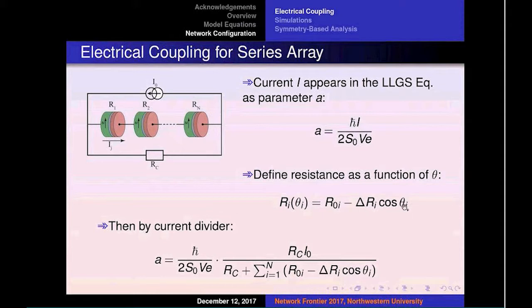When theta_i is equal to zero, the electrons are in parallel. When theta_i is equal to pi, they're anti-parallel. That produces the drastic change in the resistance.